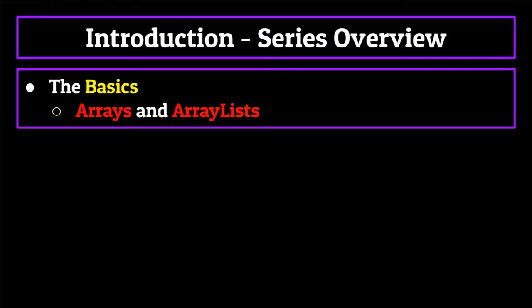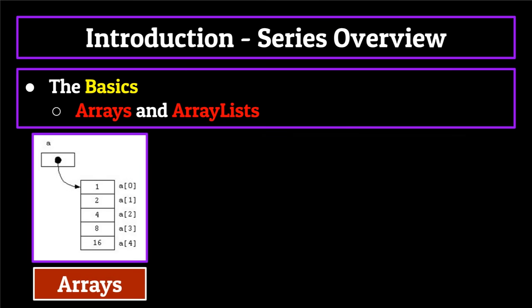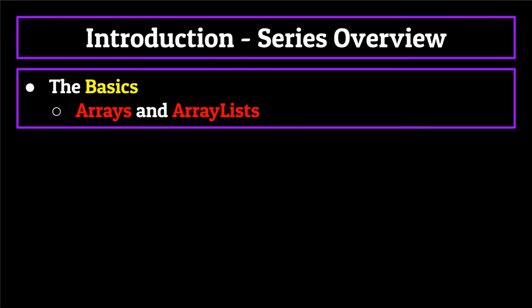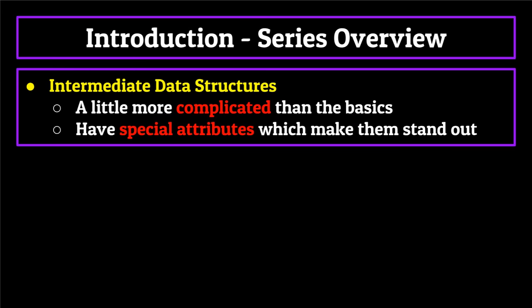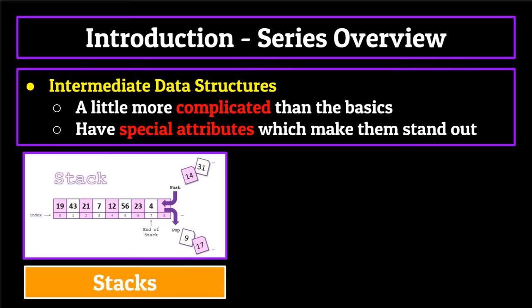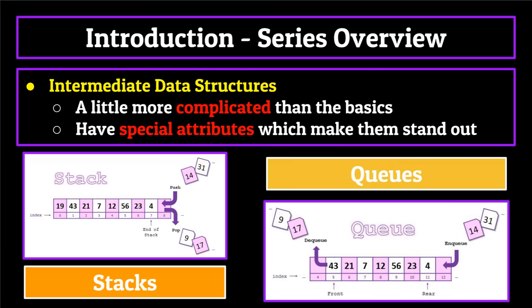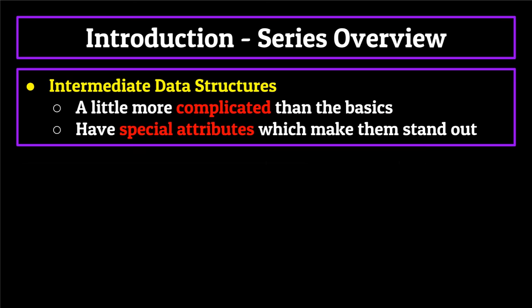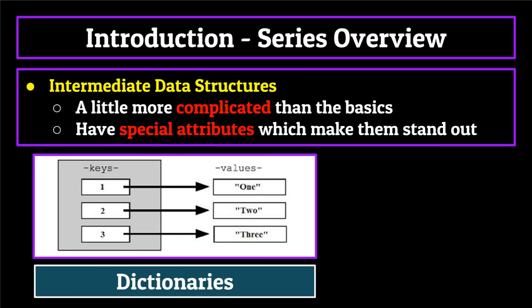From there, we'll start by diving headfirst into what I believe are the basic data structures — those being arrays and array lists. While you may already have a good understanding of what these are, I would highly suggest you still watch these segments, because we'll be going into a little bit more depth as to why they're so useful based on differences in how they're stored in the computer's memory. After that, we'll move on to the intermediate data structures, which are a little bit more complicated and have a few special attributes which make them stand out. We'll begin by taking a look at stacks, then the queue, followed by linked lists and their evolved form the doubly linked list, before moving on to the dictionary, which includes a mini lesson on hash tables. Then we'll wrap up the series talking about trees, tries, and finally heaps and graphs.